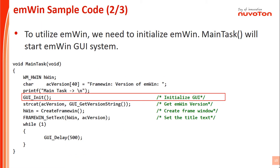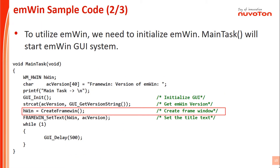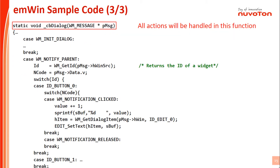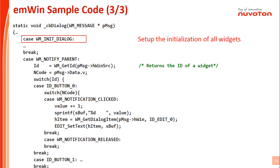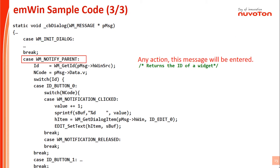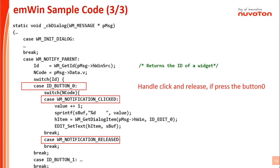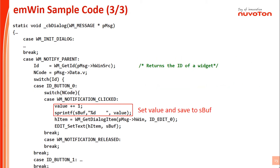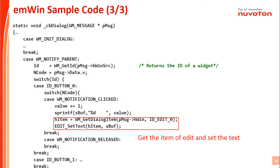Initialize GUI. Create frame window. All actions will be handled in this function. Set up the initialization of all widgets. Any action triggers this message entry. Handle click and release if the button 0 is pressed. Set value and save to array. Get the item of edit and set the text.